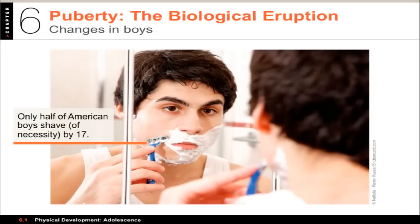Only half of American boys need to shave by the time they're 17, so facial hair growth is not universal. An increase in testosterone production by the pituitary gland causes the male testes and penis to enlarge during puberty, and pubic and facial underarm hair also develop. The male voice begins to deepen around age 14 or 15 due to growth of the larynx. Testosterone can also lead to acne and nocturnal emissions. At about age 20 or 21, puberty ceases for males due to epiphyseal closure, which prevents the long bones from growing further.